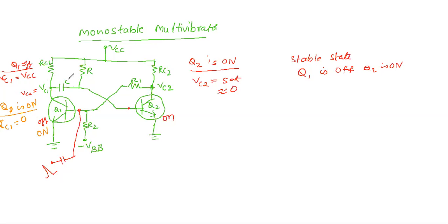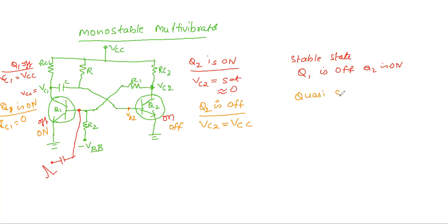This condition appears only when the trigger pulse is applied to the base of Q1. Now the collector voltage is 0 — the capacitor applies this low voltage to the base of Q2, which is not sufficient for Q2 to be in ON state. Now Q2 transistor will be OFF. The collector and emitter terminals of Q2 will be open-circuited and the collector voltage equals VCC. This condition — Q1 ON and Q2 OFF — is called the quasi-stable state of the monostable multivibrator, lasting for a short time T.